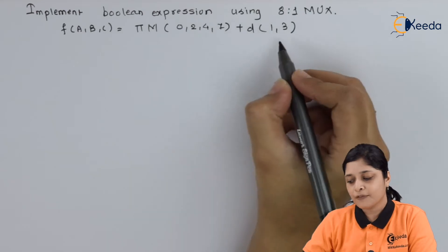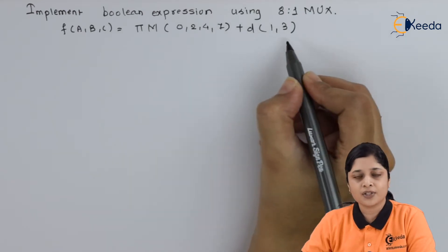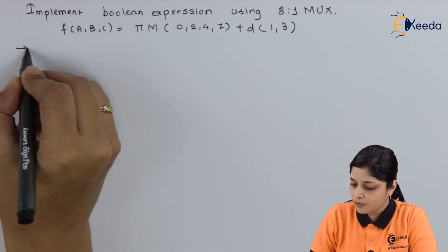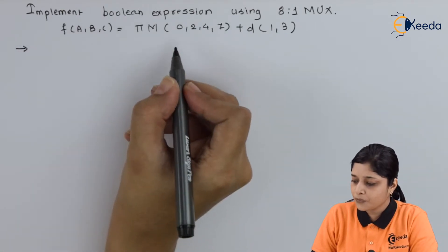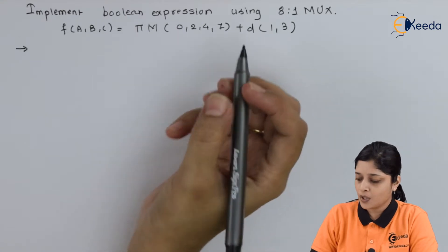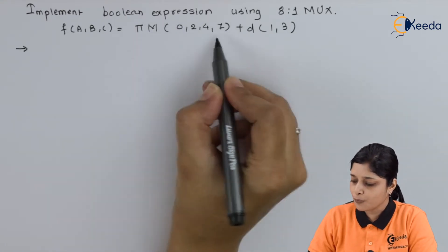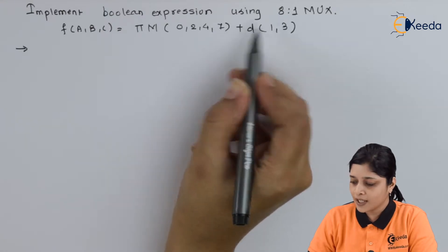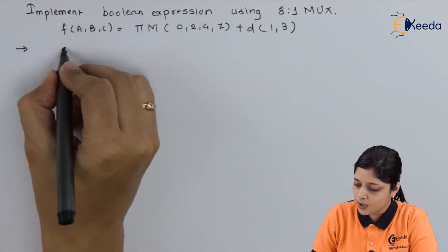So if you see here, don't care conditions are present. Now while solving the problem, first of all you have to decide which MUX you will use. So here product of max terms are present. 7 is present over here. That's why we can use 8 is to 1 MUX.